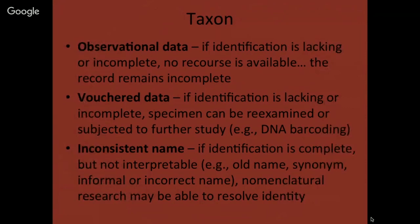A few comments about each dimension. For taxon, observational data are without recourse — if the identification is lacking or incomplete, that record will always be incomplete. When a voucher exists, ideally a specimen or photograph, it's always possible to subject it to further study. Many taxon names may be inconsistent or old or not on an authority list, but if the identification is complete, we can often resolve it to a modern accepted name, essentially rescuing or fixing that record.